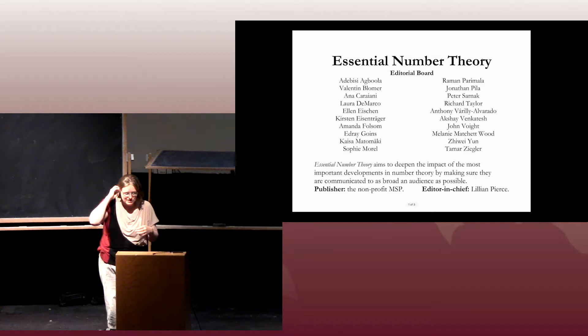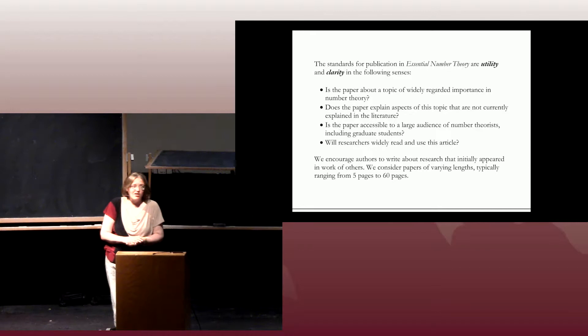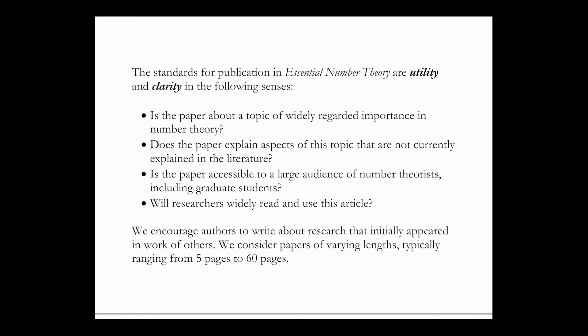We have a brief advertisement for Central Number Theory, which is a new journal starting under a very different model than traditional journals. The standard for publication is that articles should be extremely useful to the community, as opposed to original research breakthroughs. The standard is usefulness. So if you are doing computations or developing computational tools that might be of use to other people, that might be the kind of paper you could consider submitting to Essential Number Theory. Feel free to talk to me or contact any of the editors if you have an idea and wonder if it's an appropriate paper.